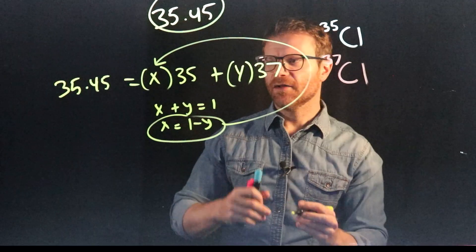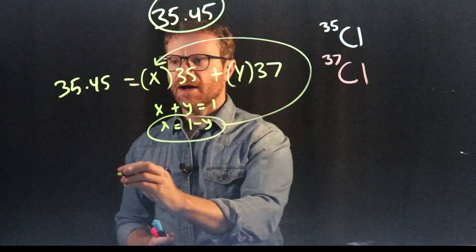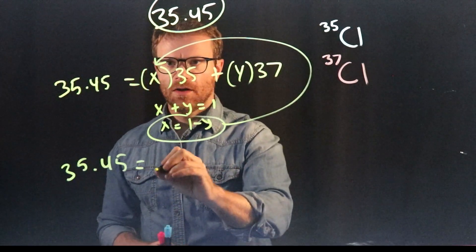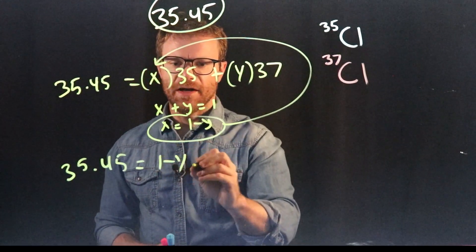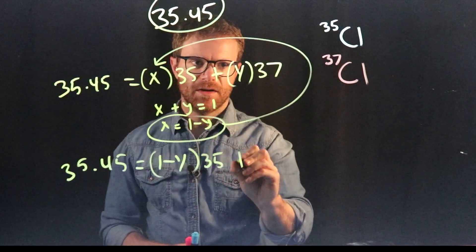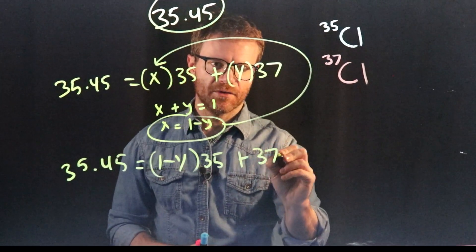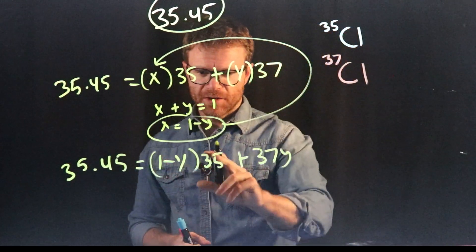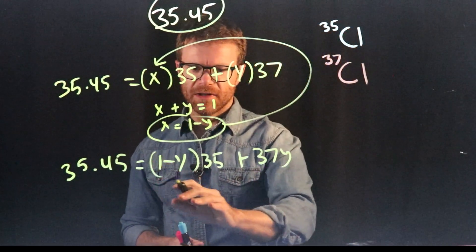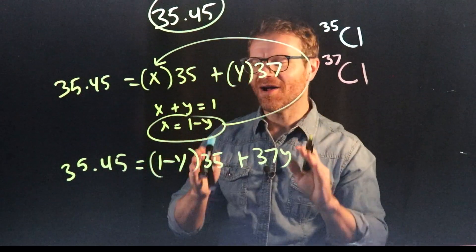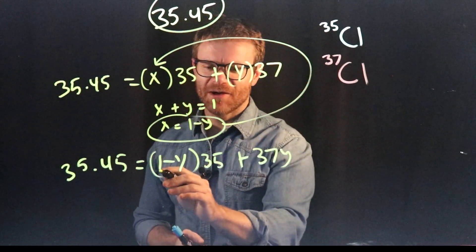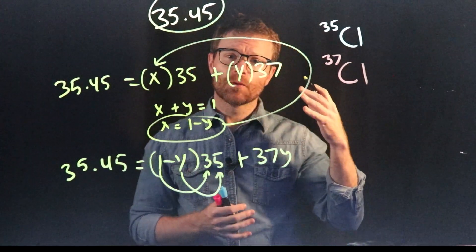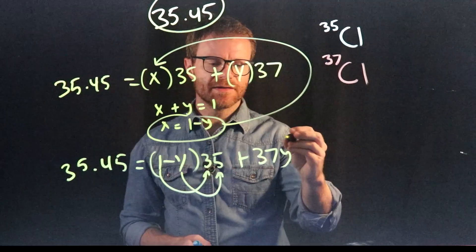So now instead of writing it out the way we did before, we could write it out as 35.45 equals 1 minus Y times 35 plus 37Y. Right, 37 times Y is 37Y. Distributive property means that we take the 1, multiply it by the 35, and we also take the negative Y and multiply it by the 35. And then we'll rewrite our equation as this.